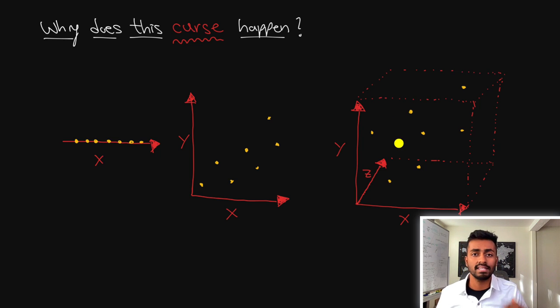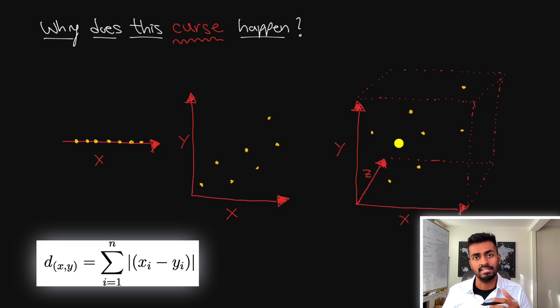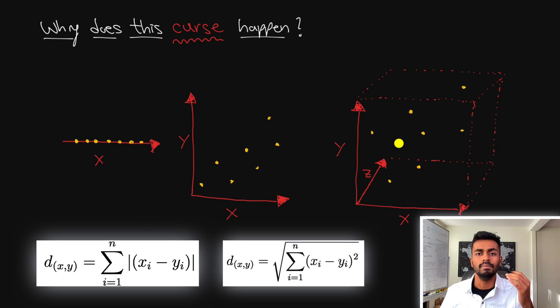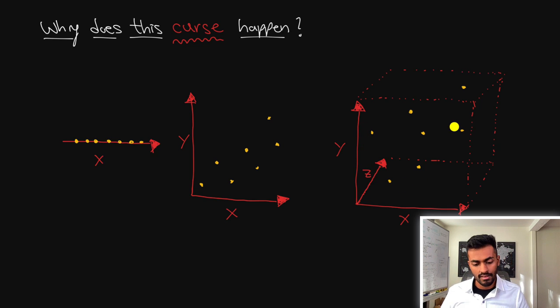Mathematically we can see this is the case if we use distance metrics like the Manhattan distance or the Euclidean distance, because adding dimensions you'll always add a positive term to the distance. As dimensions tend to infinity, the distance between these points will also tend to infinity, and so you lose the concept of neighborhood and relative distances.